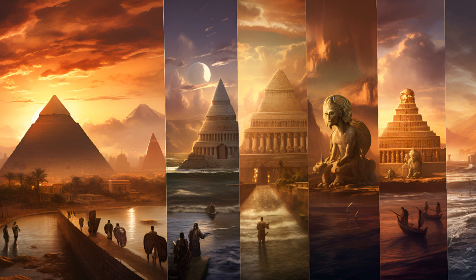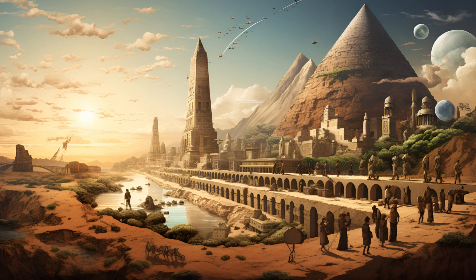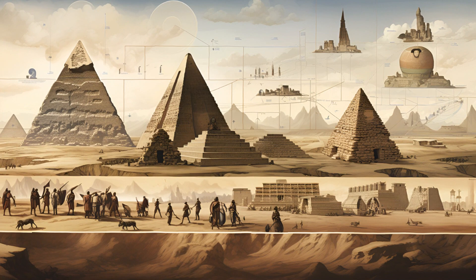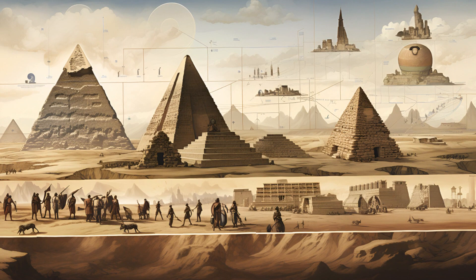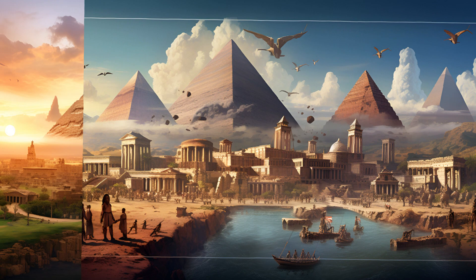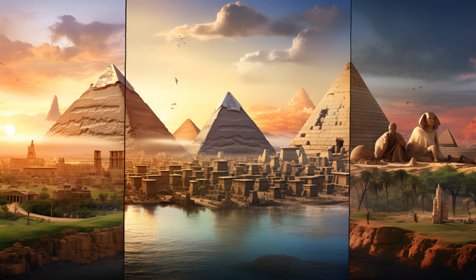Around 3000 BCE, the Bronze Age begins, leading to advancements in metallurgy and the emergence of early city-states in Mesopotamia and the Indus Valley. Characterized by the widespread use of bronze—an alloy of copper and tin—for the production of tools, weapons, and ornaments, the mastery of metallurgy opened new horizons for ancient civilizations. Bronze tools and weapons were stronger and more durable than those made of stone or bone, facilitating advancements in agriculture, construction, and warfare.